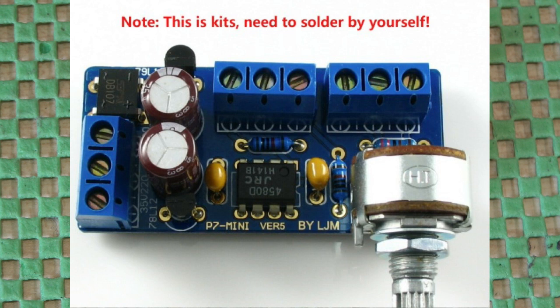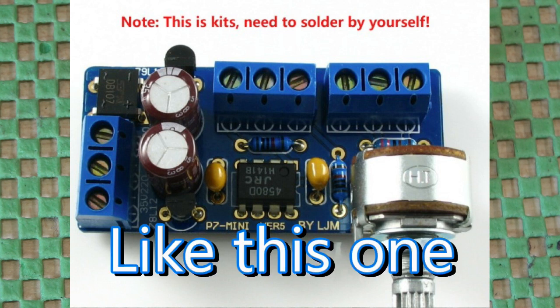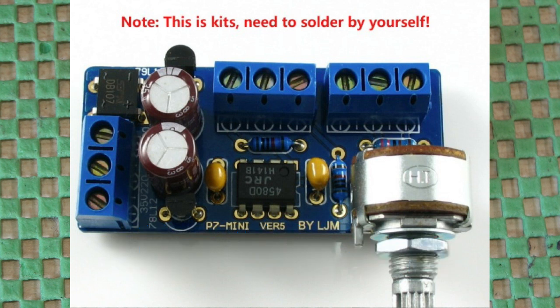There's other ones that have power supplies built in, in other words you just feed AC into it, and it's got all the regulation and smoothing and everything like that. And then there's the further advance from that, that's complete with volume pot, usually a 50k log, which is exactly what this circuit needs.